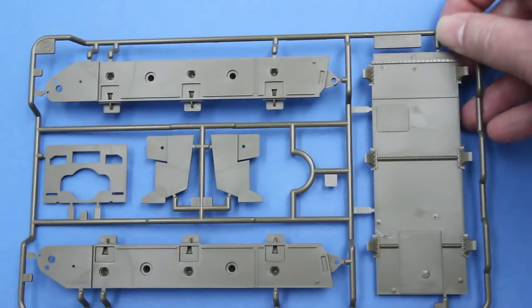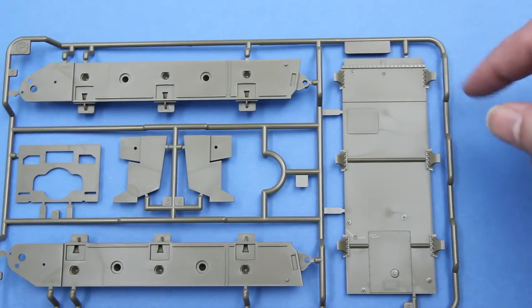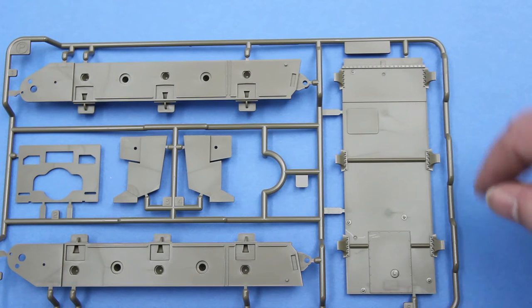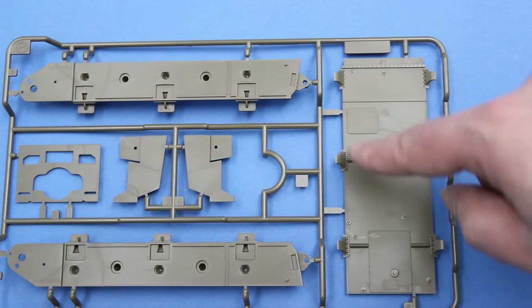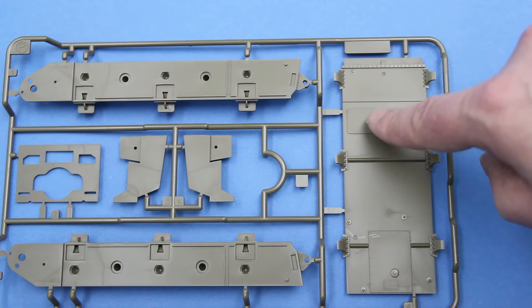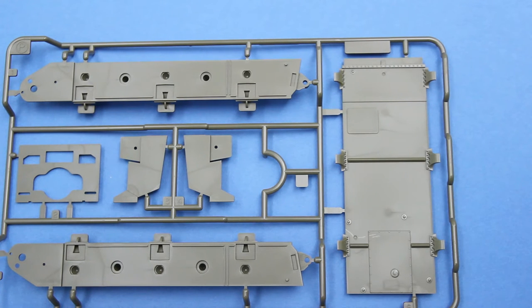And on the other side you can see some detail for the underside of the tank. Some nice bolt detail here for the mounts for the suspension. And this is the escape hatch that goes in the floor behind the assistant driver's seat.